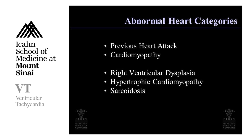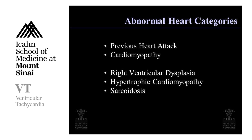Before we talk about catheter ablation, let's talk about the different medical conditions that comprise these abnormal hearts. The most common is a previous heart attack — abnormal tissue forms that can cause tachycardia. There is also cardiomyopathy, where the heart just becomes weak, can result in heart failure, and can also cause ventricular tachycardia. Three rarer conditions include right ventricular dysplasia, or RV dysplasia, where heart function is typically normal but tachycardias can occur; hypertrophic cardiomyopathy, where the heart tissue becomes very thick and fibrotic; and sarcoidosis, a rare condition with fibrosis in the lungs and heart that can cause ventricular tachycardia.